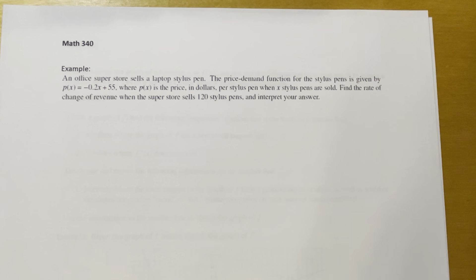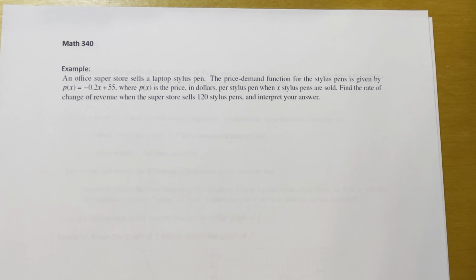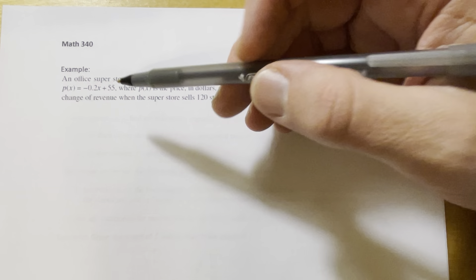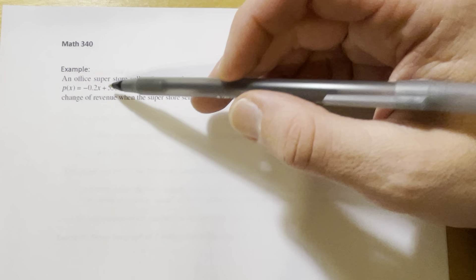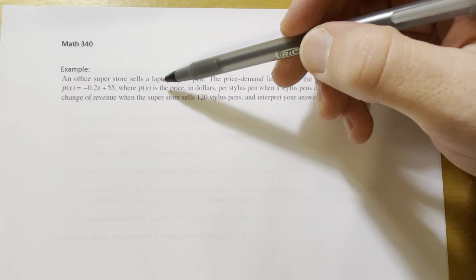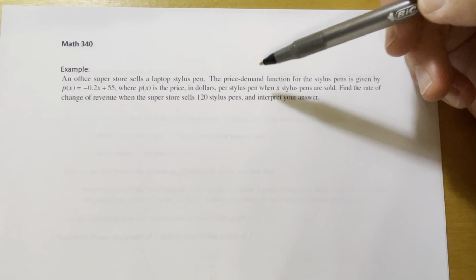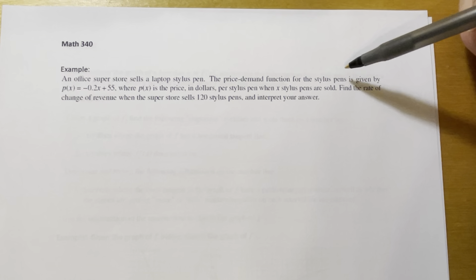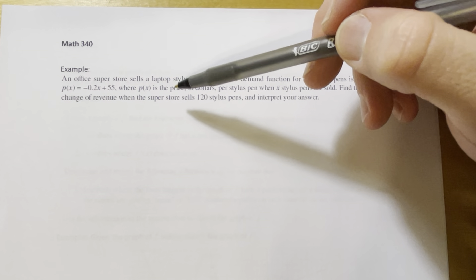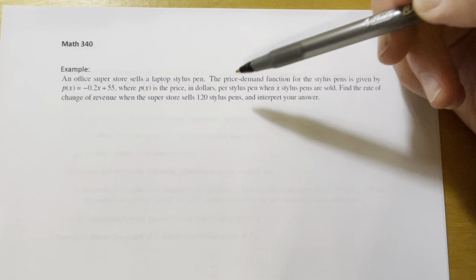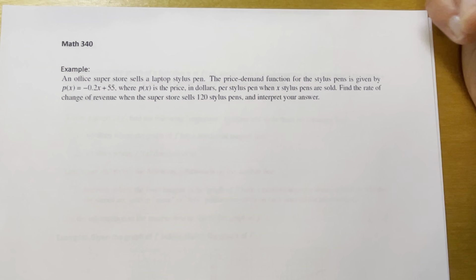Let's try another example. We're going to be looking at an application problem this time. An office superstore sells a laptop stylus pen. The price demand function for the stylus pens is given by P of X equals negative 0.2X plus 55, where P of X is the price in dollars per stylus pen when X stylus pens are sold. Find the rate of change in revenue when the superstore sells 120 stylus pens and interpret your answer.